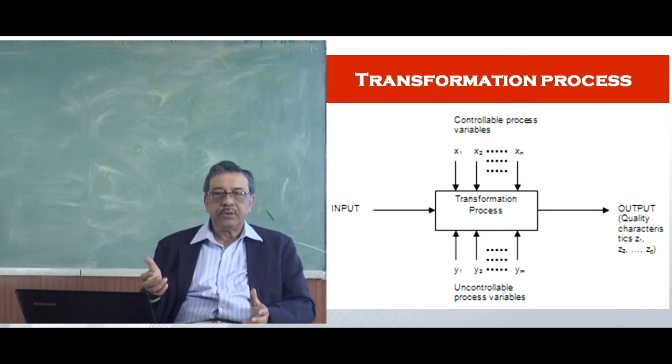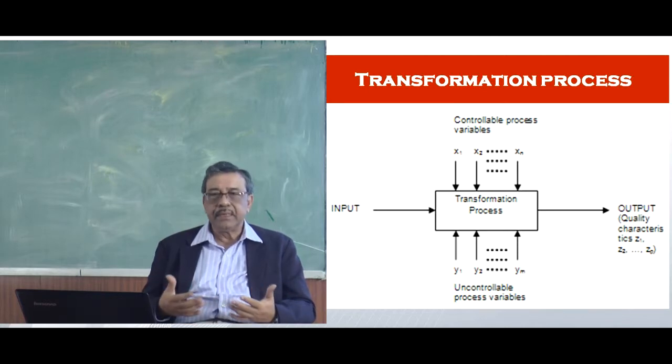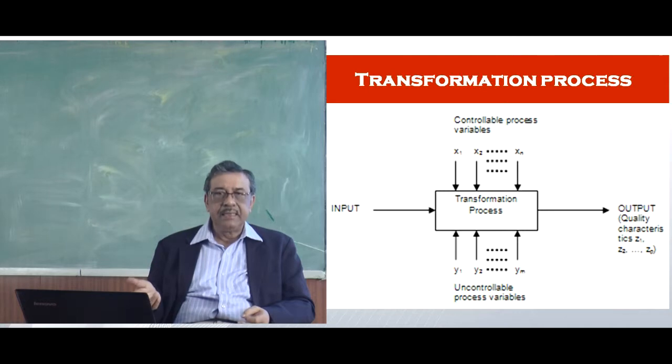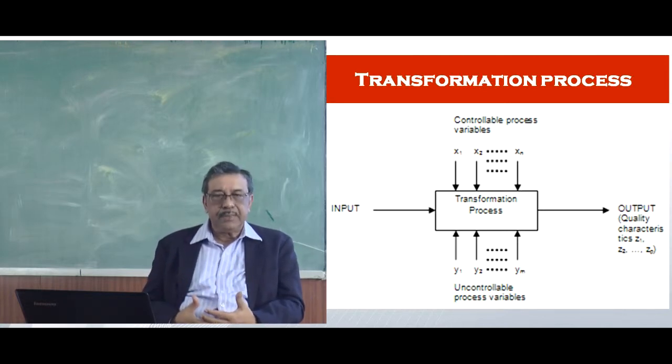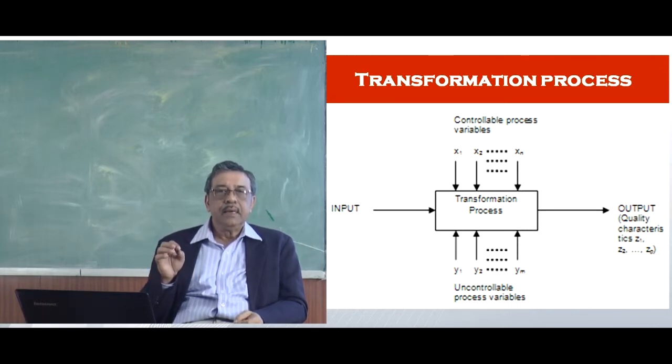In our cement plant application we said that the controllable variables are things like rotation of the machine or the fuel that I am injecting into my kiln and output characteristic is the characteristics in the output that you want to achieve or desired output. For example, in our situation we said that one of the quality that we want to measure in the output is the carbon monoxide content. The other controllable variable that we wanted to measure was the burning zone temperature. In a steel plant the output we want maybe the output of steel should contain less than 1% hydrogen because there are impurities which are coming in at the output.